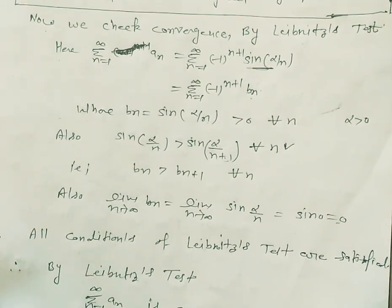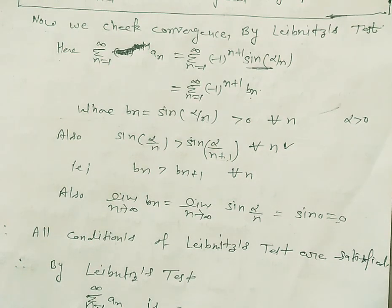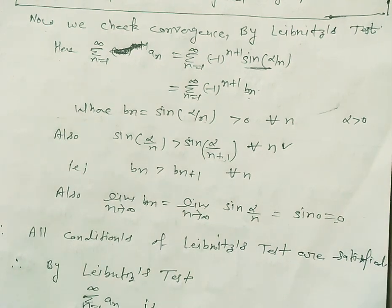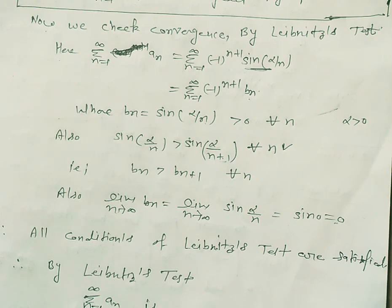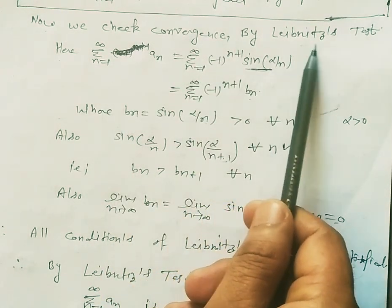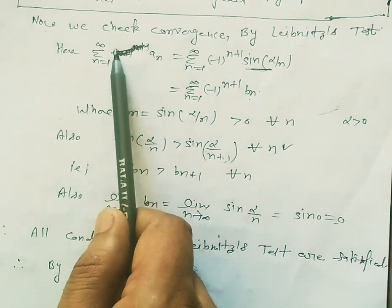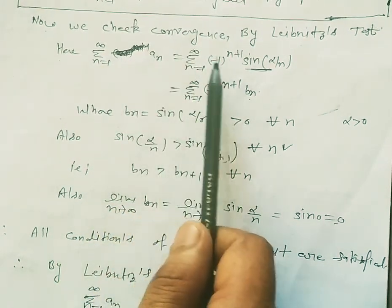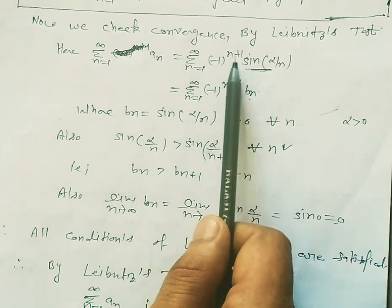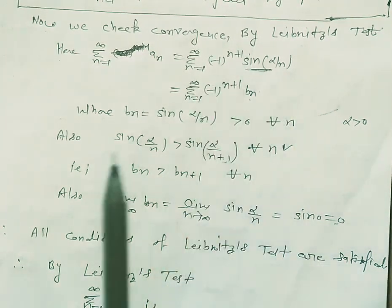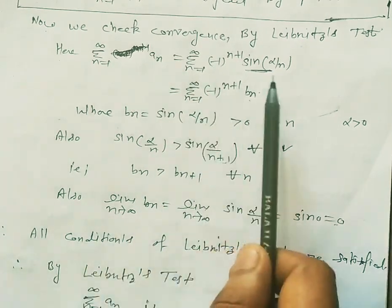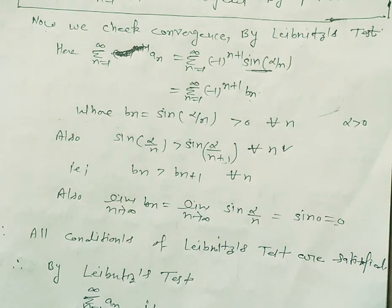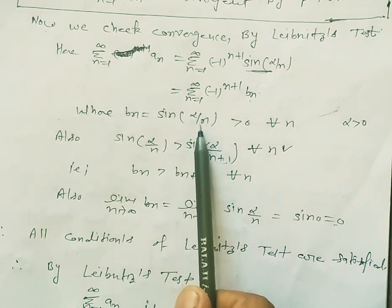Since the series is divergent after applying modulus, it is not absolutely convergent. So we now check convergence of the alternating series by the Leibniz test. The series is summation n=1 to infinity of (-1)^(n+1) * sin(α/n), where b_n = sin(α/n) > 0 because α > 0.